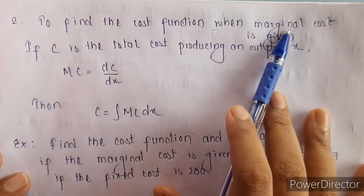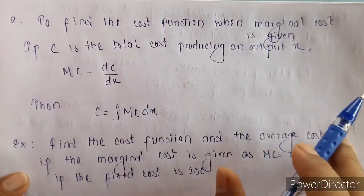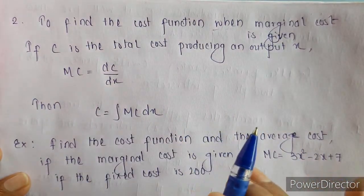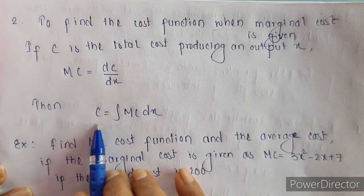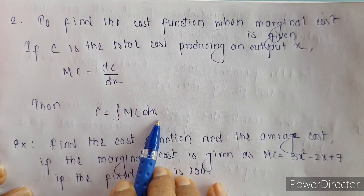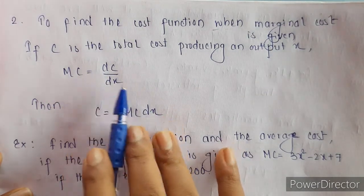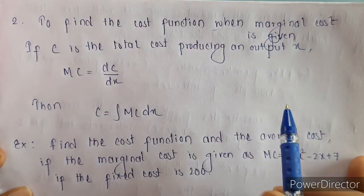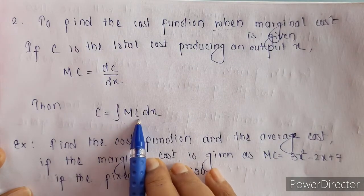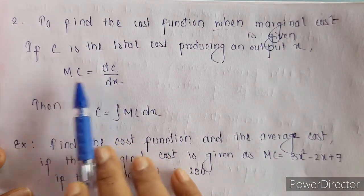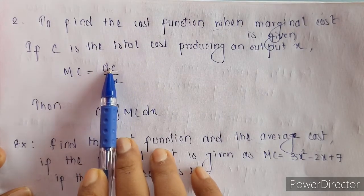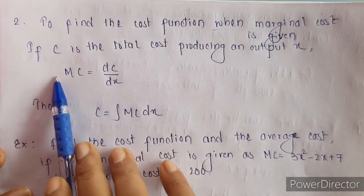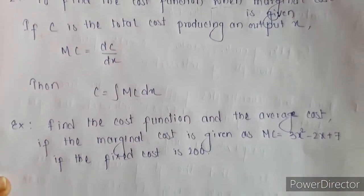Next, we have to find the cost function when the marginal cost is given. We know that marginal cost is the change in cost with respect to change in output. So cost is the integral of marginal cost with respect to output. Just as marginal revenue is the change in revenue, marginal cost is the change in cost — so cost equals the integral of marginal cost. Let us look at this example.